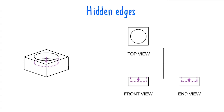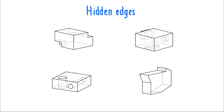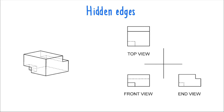Hidden edges have a lot of variety. In this first example, an object has two cutouts — one at the top back and another at the front bottom left corner. The back cutout is hidden from the front view, so the position of this ledge is depicted by a dotted line. The bottom left cutout is hidden from the top view, so those edges are depicted as dotted lines in the top view, and that same cutout is also hidden from the end view, so those edges are depicted as dotted lines in the end view as well.